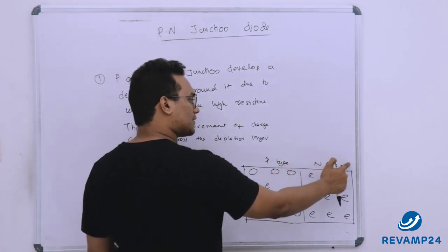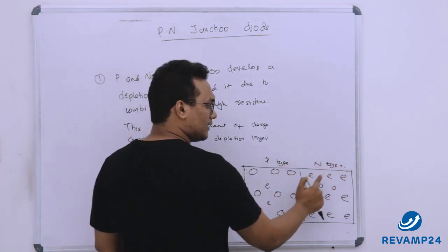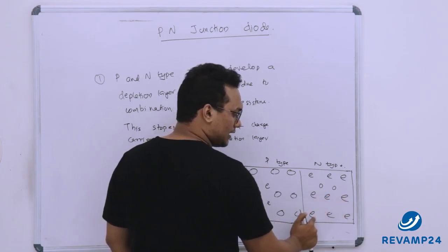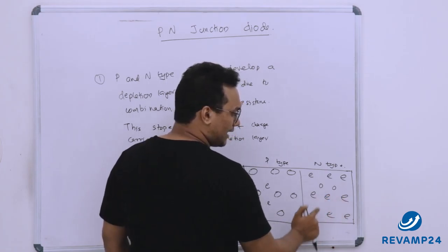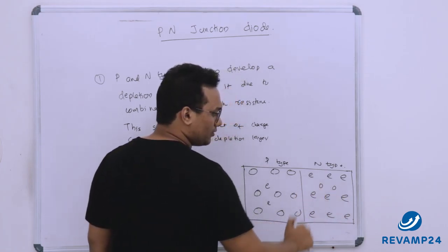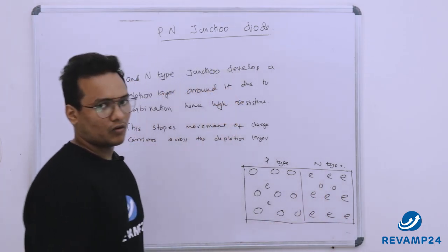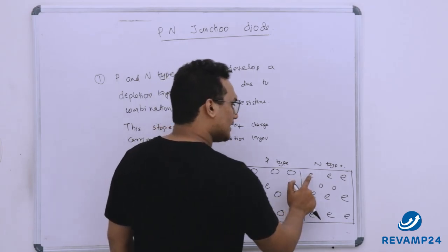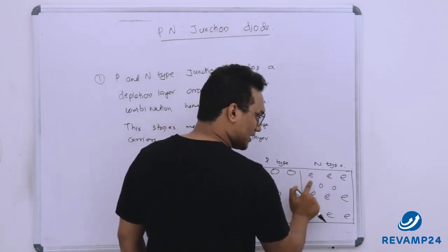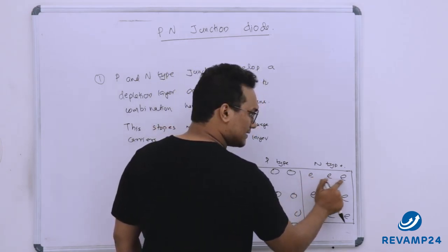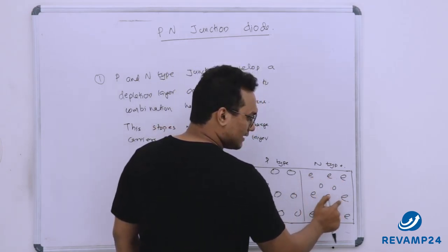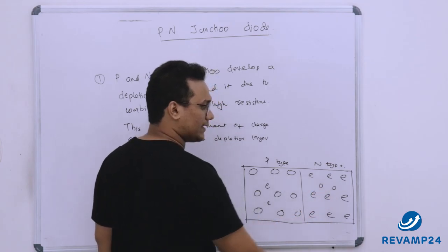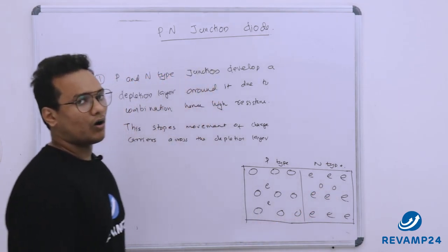In the case of N-type semiconductor, we have more number of free electrons compared to the number of holes. The majority carriers are electrons and the minority carriers are holes.